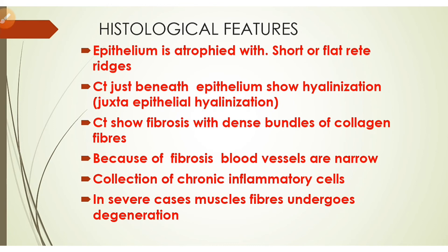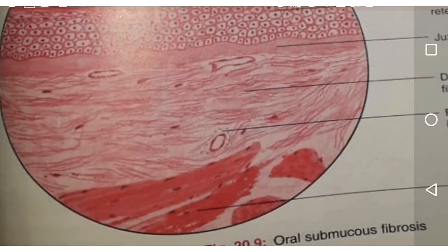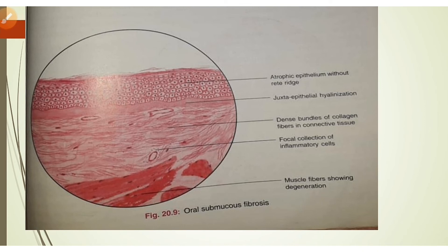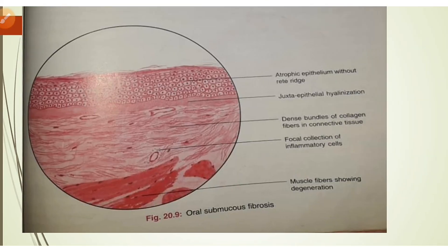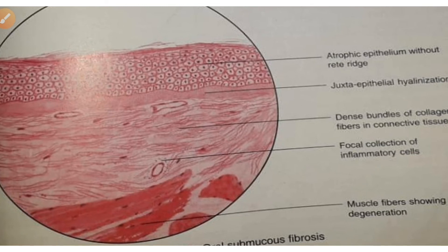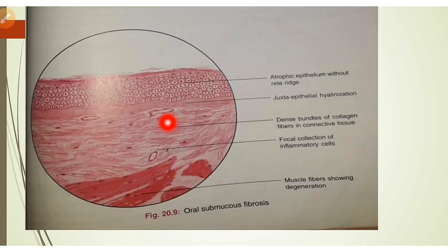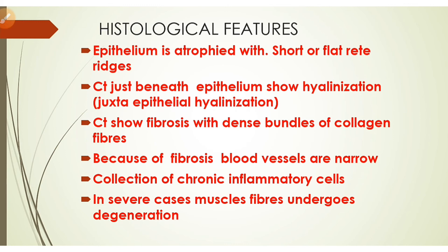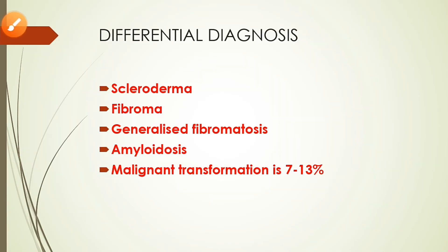The connective tissue shows fibrosis with dense bundles of collagen fibers deposited throughout. Blood vessels become narrow as deposited fibers compress them. There is also a collection of chronic inflammatory cells such as lymphocytes and plasma cells. In severe cases, muscle fibers undergo degeneration.